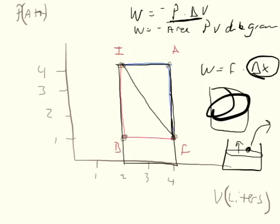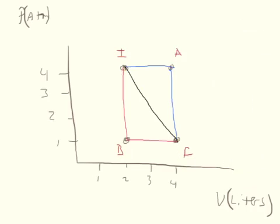For part A along path IAF, we do the pressure times the change in volume — from here to here — because the pressure is constant throughout the expansion. It stays constant all the way until the volume stops changing.